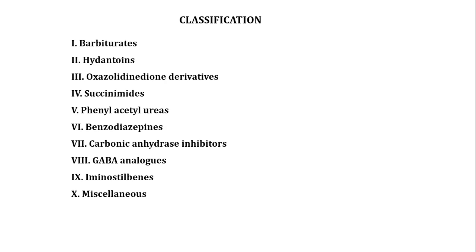Next is the classification of anti-convulsant drugs. These are classified in the following way: first, Barbiturate derivatives; second, Hydantoin derivatives; third, Oxazolidinedione derivatives; Succinamide; Phenylacetylurea; Benzodiazepine derivatives; Carbonic anhydrase inhibitors; GABA analogues; Iminostilbene; and miscellaneous drugs.